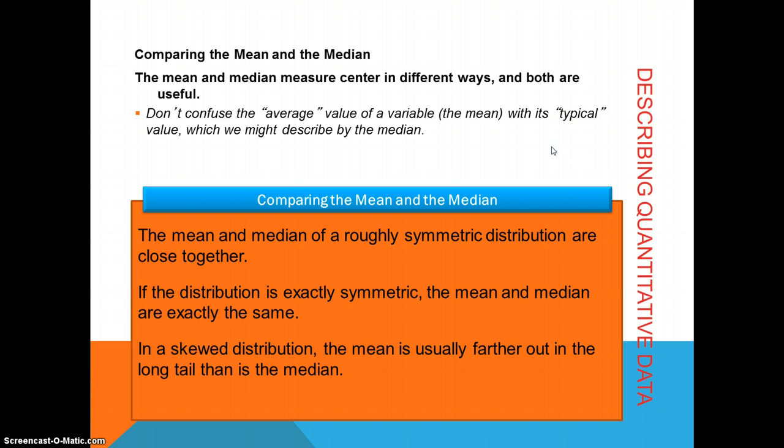Now, if the median and the mean are close together, the distribution is relatively symmetrical. In fact, if the distribution is exactly symmetrical, the median and the mean are exactly the same. But if the distribution is skewed, the median is farther away from the mean.